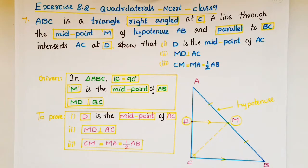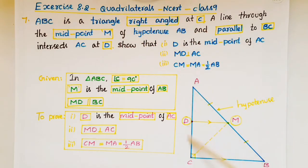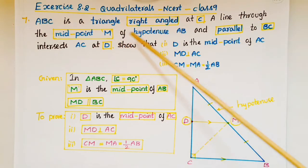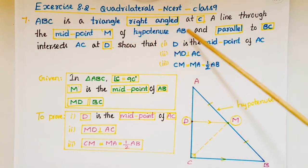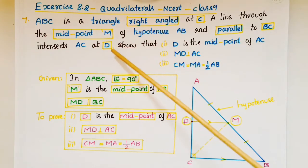Hello everyone. Today I am going to tell the solution of the 7th problem from Exercise 8.2 from the Quadrilaterals chapter from NCERT Class 9. In this problem, ABC is a triangle right-angled at C. In triangle ABC, angle C is equal to 90 degrees, and a line through the midpoint M of hypotenuse AB and parallel to BC intersects AC at D.